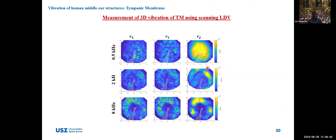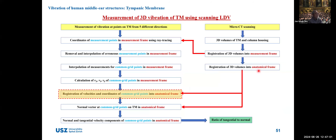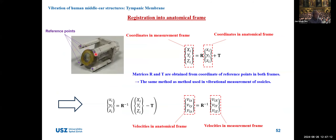This shows Vx, Vy, Vz at 0.5 kHz, 2 kHz, and 8 kHz for a specific temporal bone. All velocity coordinates at the common grid points are registered in the anatomical frame using four reference points to correlate between the measurement frame and the anatomical frame — the same method as used for the malleus-incus complex. At each measurement point, the normal vector to the surface was calculated, and normal velocity and tangential velocity components were derived from these equations.